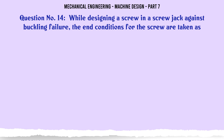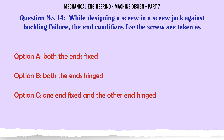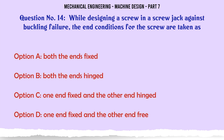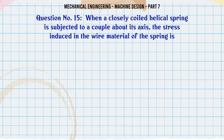While designing a screw in a screw jack against buckling failure, the end conditions for the screw are taken as: a) both ends fixed, b) both ends hinged, c) one end fixed and the other end hinged, d) one end fixed and the other end free. The correct answer is: one end fixed and the other end free.